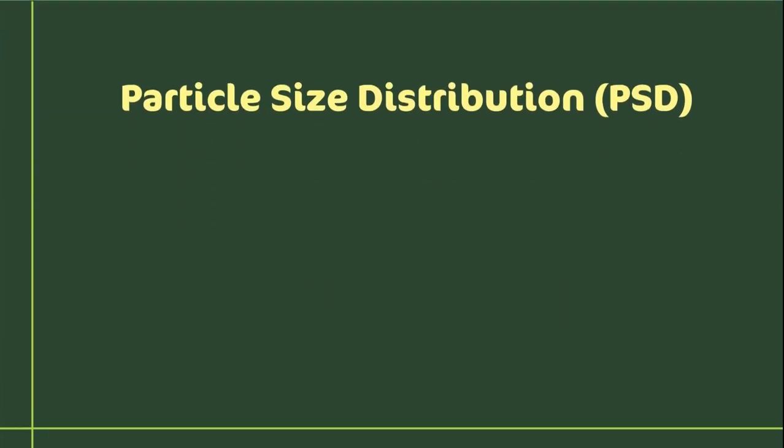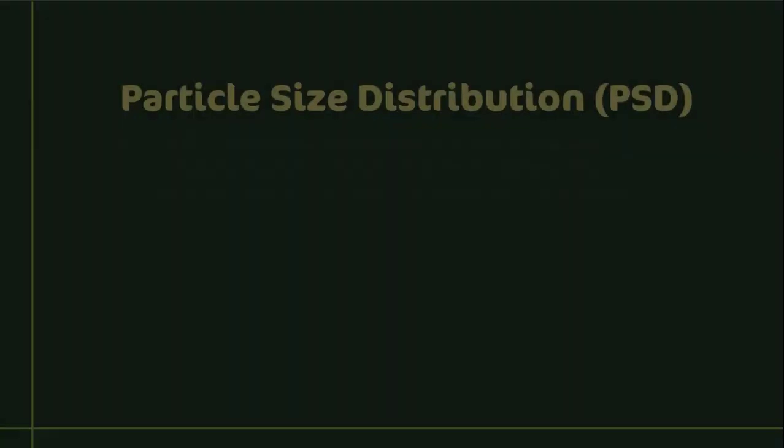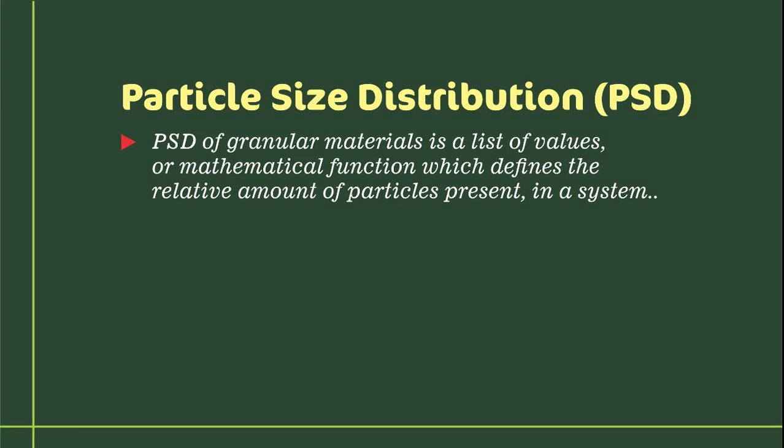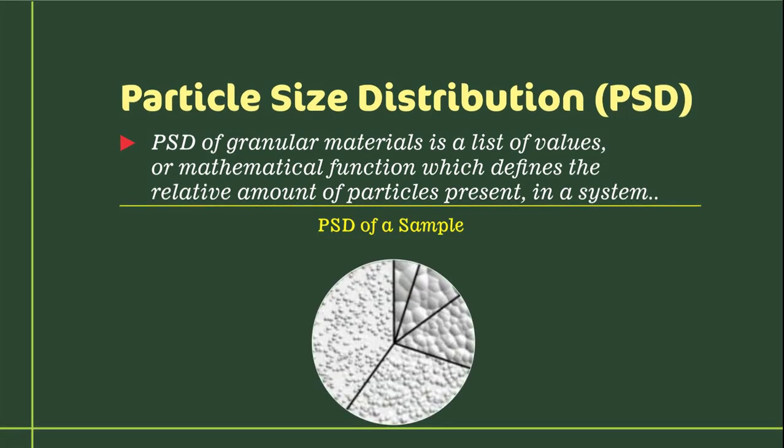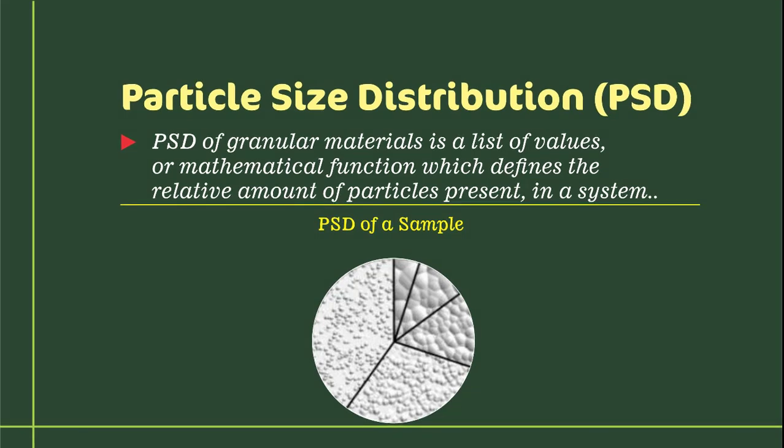Particle size distribution or PSD for short may simply be defined as the relative amount of particles which are present in a solid sample. In this PSD sample, the particles are distributed and they contain varying sizes of particles based on their diameter measurements.